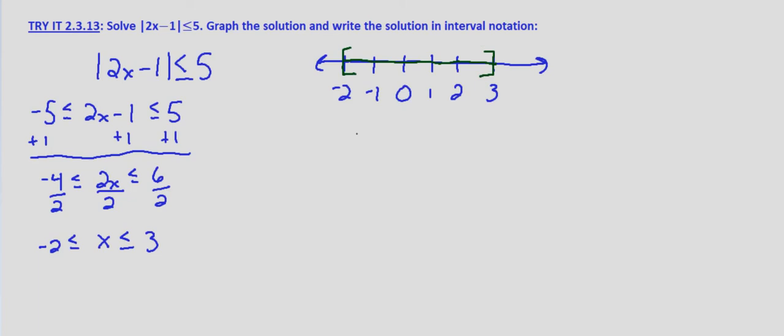Now, to put this into interval notation, we use the same brackets because it is inclusive. And the interval that is the solution to this absolute value inequality is negative 2, 3, inclusive.